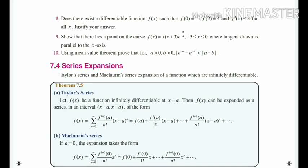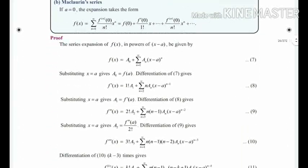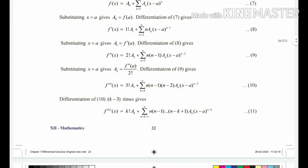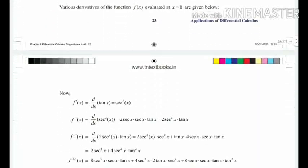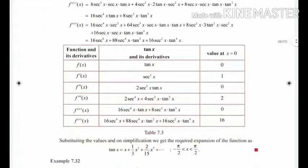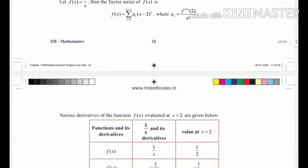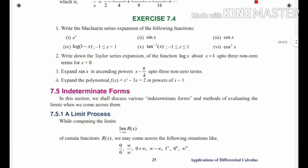Now, Section 7.4 — Series Expansions — this is deleted from your portion. The examples, including Example 7.30, are all deleted. The whole thing is deleted. Exercise 7.4 has been deleted fully. This section is completely omitted for you.